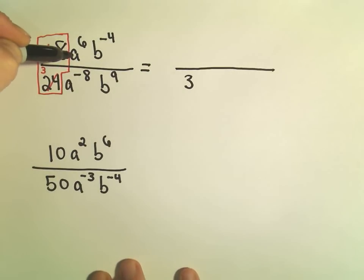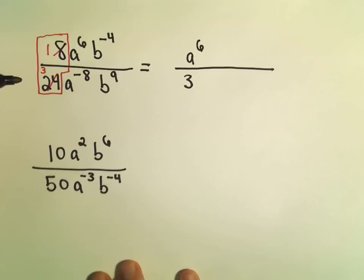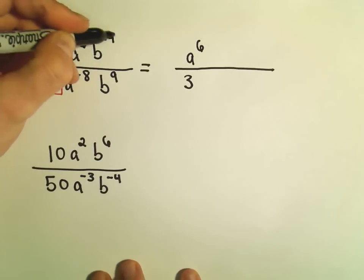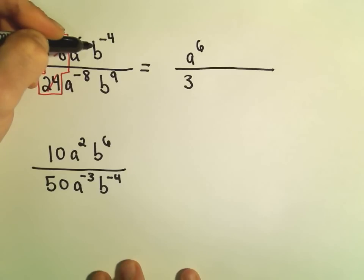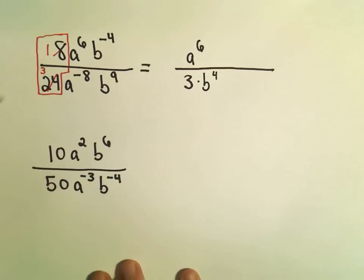So I just take them one at a time. I look at the a to the 6th. He's a positive exponent, so that's going to stay on top. We have b to the negative 4. Well, this is a negative exponent, so to make it positive, we can put it in the denominator. Okay, so I've taken care, I've kind of moving things around.